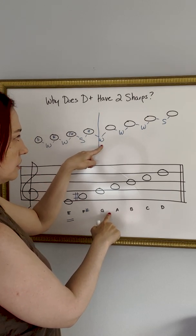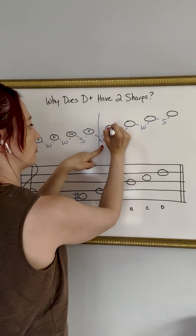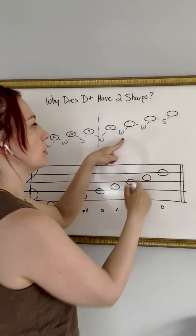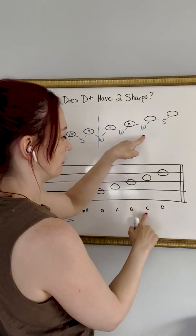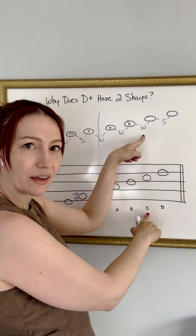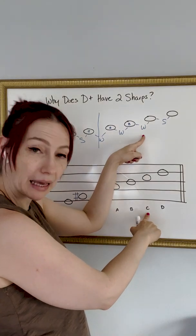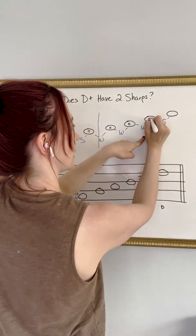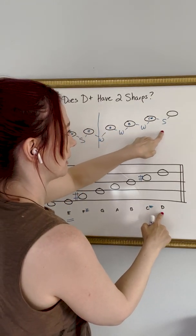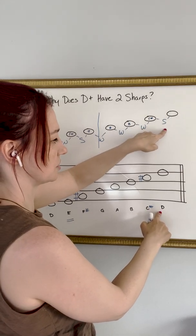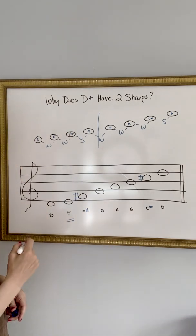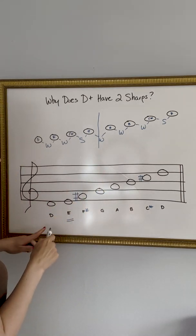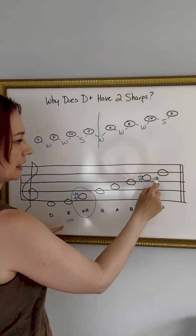Now we find the whole tone that connects the two sections: G to A. A whole tone up from A is B. Then a whole tone up from B — B and C are semitones apart, so what can we do to C to make it a whole tone away from B? We can add a sharp. So we'll add a sharp to C. And then the last step is a semitone, and the semitone up from C sharp is D. By following the pattern of whole tones and semitones, we can see that the formula leads us to having F sharp and C sharp in D major.